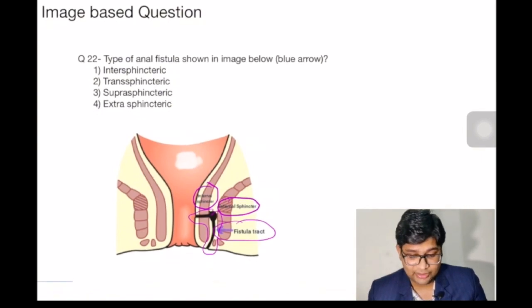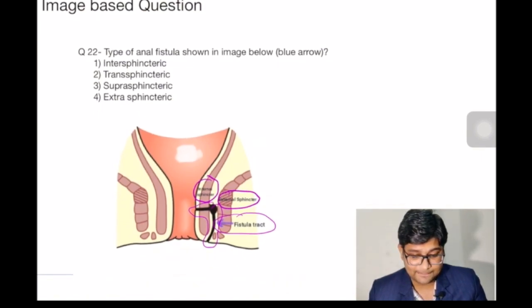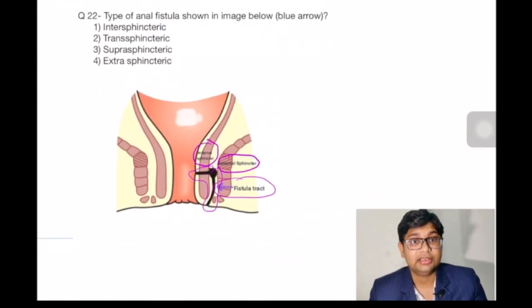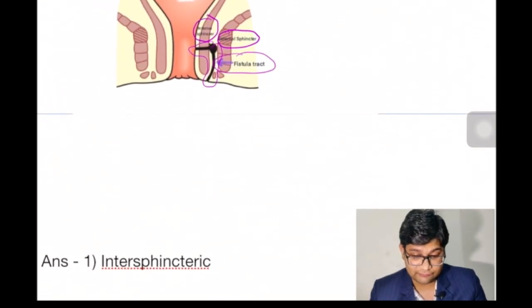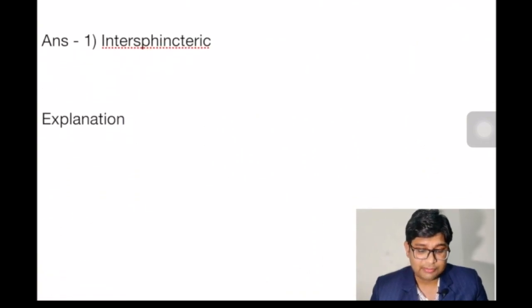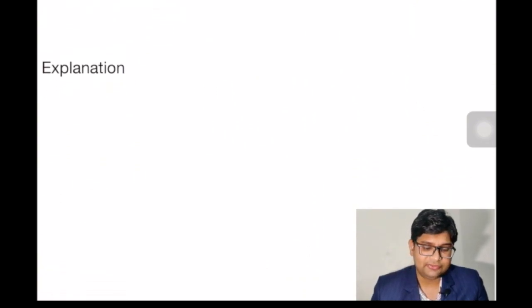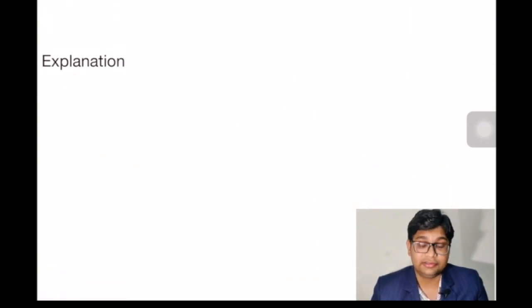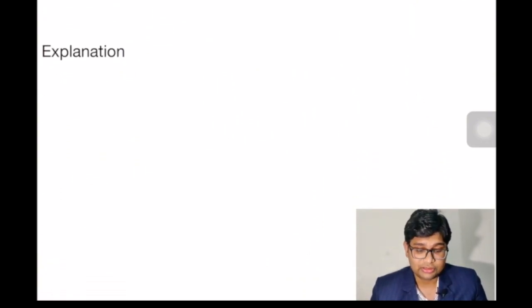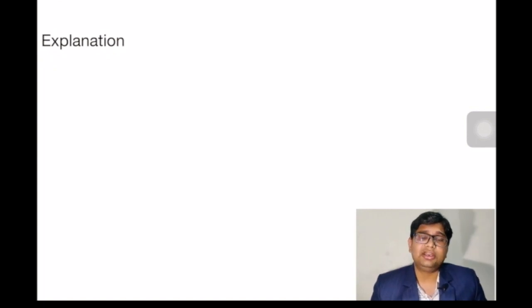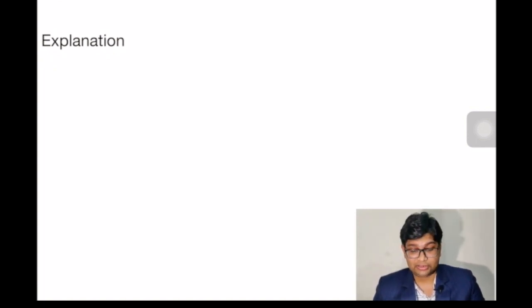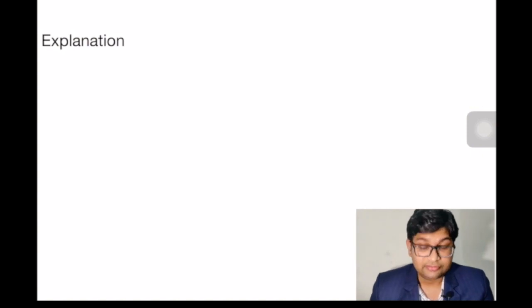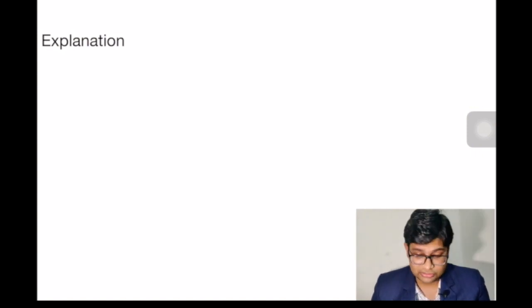The answer is option 1: inter-sphincteric fistula. Coming to the explanation of this question, let me first give you a brief anatomy of the anorectal region that will help you solve this question.